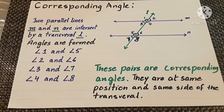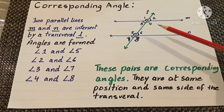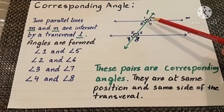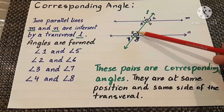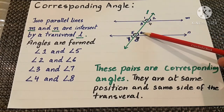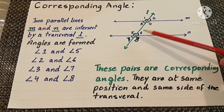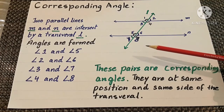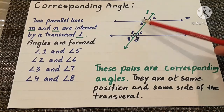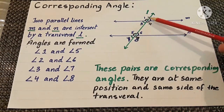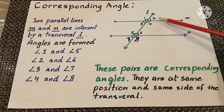Now, what are the corresponding angles? The angles that are formed on the same side and at the same position of the transversal are known as corresponding angles: angle 1 and angle 5, angle 2 and angle 6, angle 3 and angle 7, and angle 4 and angle 8. These are corresponding angle pairs because they are at the same position and on the same side of the transversal intersecting the two parallel lines M and N.